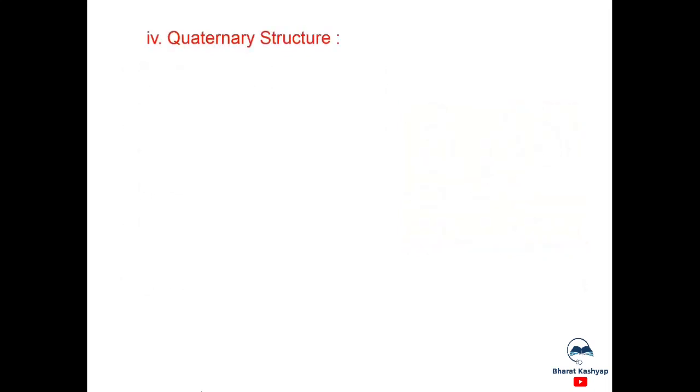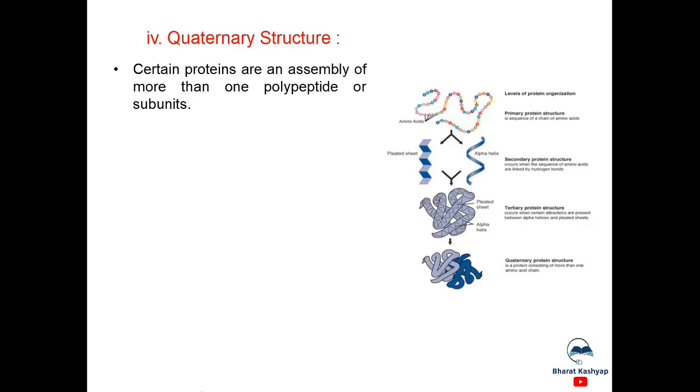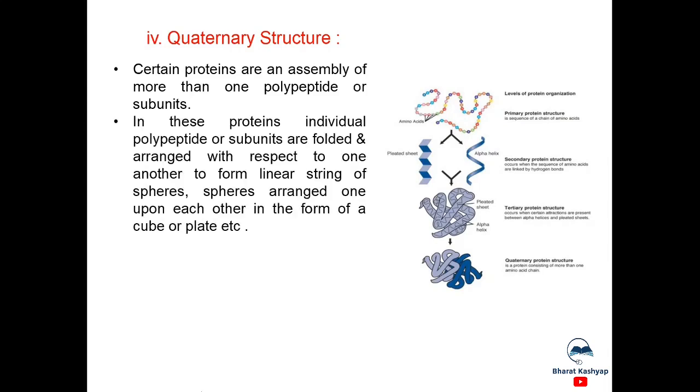Now, quaternary structure of proteins. Certain proteins are an assembly of more than one polypeptide or subunits. In these proteins, individual polypeptides or subunits are folded and arranged with respect to one another to form linear string of spheres. Spheres arranged one upon each other in the form of a cube or a plate.